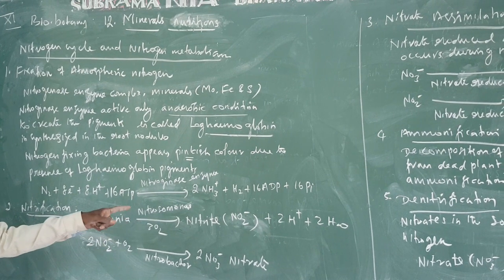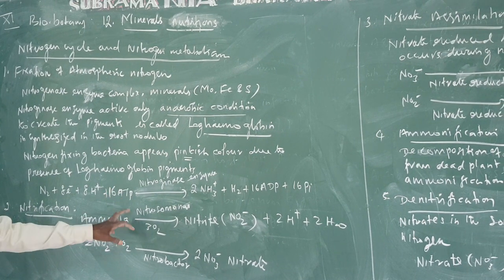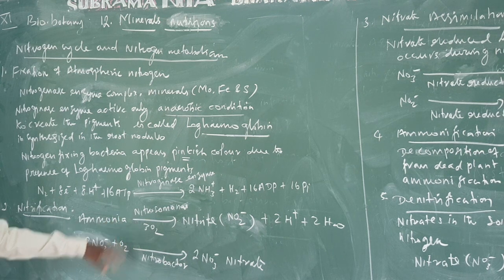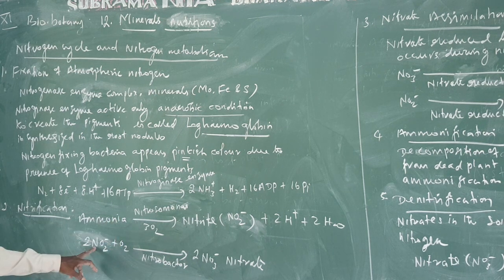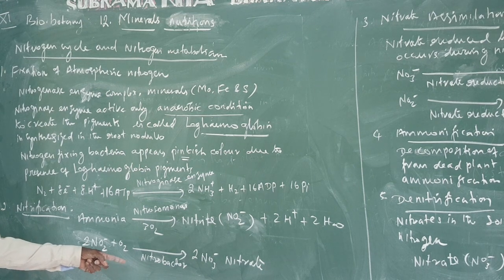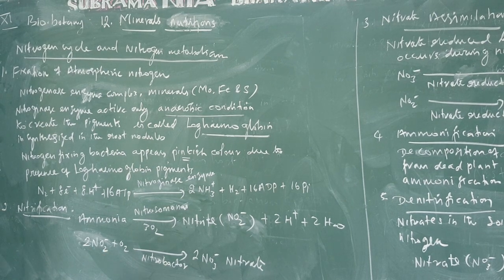Ammonia is converted into nitrite with the help of Nitrosomonas bacteria. Then nitrite is converted into nitrate with the help of Nitrobacter bacteria.